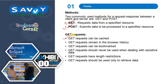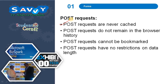GET requests can be cached, remain in the browser history, and can be bookmarked. GET requests should never be used when dealing with sensitive data, have length restrictions, and should be used only to retrieve data. POST requests are never cached, do not remain in the browser history, cannot be bookmarked, and have no restrictions on data length.